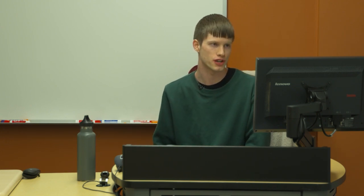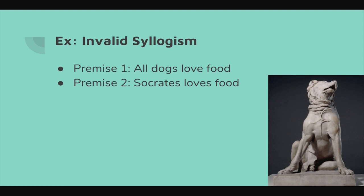For fun, here's an invalid syllogism. Premise one: all dogs love food. Premise two: Socrates loves food. Therefore, Socrates is a dog. The problem is that nowhere in the premises does it say dogs are the only creatures that love food. Socrates could be a human, a cat, or some other creature that also loves food. So this is not a valid syllogism — and this is the type of reasoning that Bayes' theorem does not fall victim to.